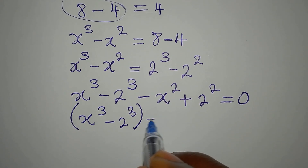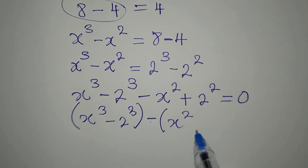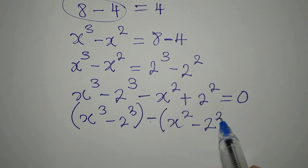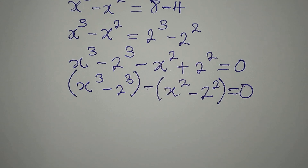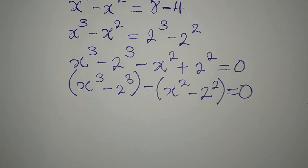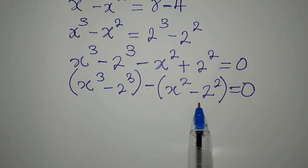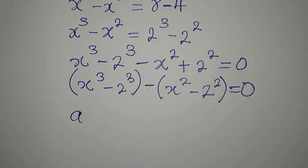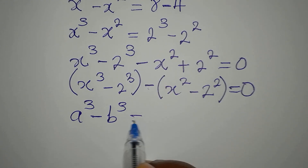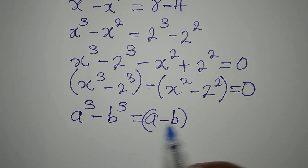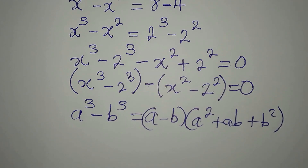I'm going to put this in brackets: we have x cubed minus 2 cubed in one group, and then minus, in another bracket, x squared minus 2 squared — everything equal to zero. We apply the difference of two cubes here: if we have a³ minus b³, this is written as (a minus b)(a² plus ab plus b²).